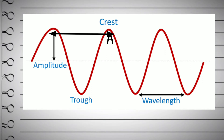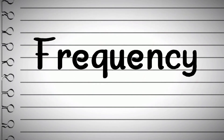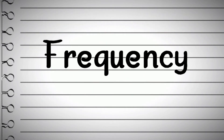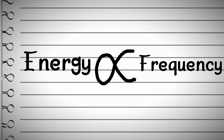Next is amplitude. Amplitude is the maximum height or the maximum depth of the wave. In the diagram, the distance from point A to C, or the distance from point C to D, is the amplitude of the wave. The next definition is frequency. It is the most important definition for better understanding of radiation energy, because the energy of electromagnetic radiation is directly proportional to the frequency of the waves.